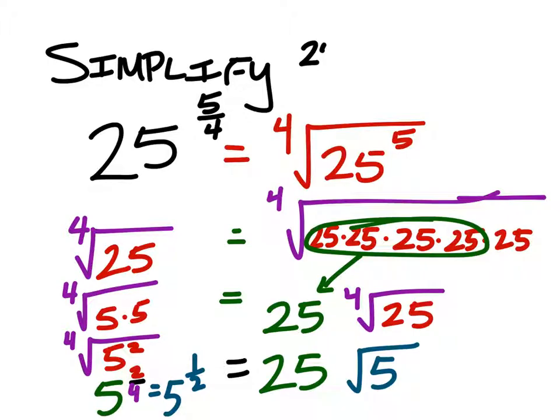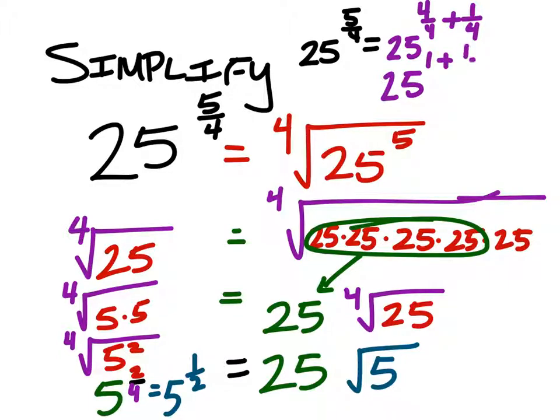If we look at 25 to the power of 5 fourths, I could also simplify this or break it up into 25 to the power of 4 fourths plus 1 fourth. So that's 25 to the power of 4 fourths plus 1 fourth, which would be the same as 25 to the power of 1 plus 1 fourth.